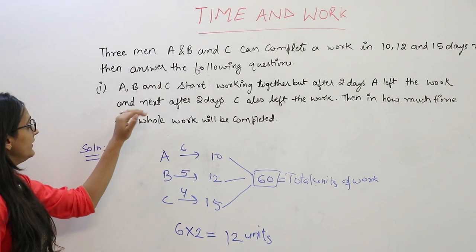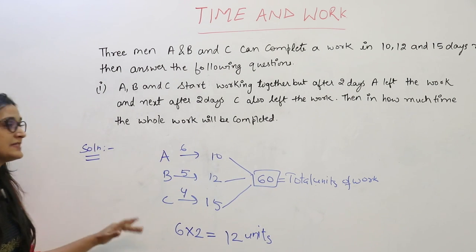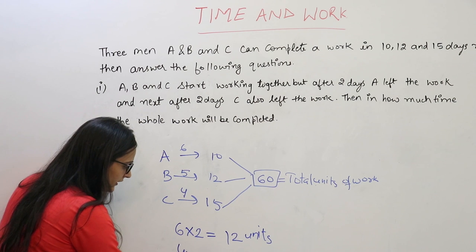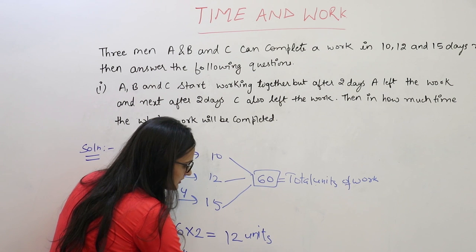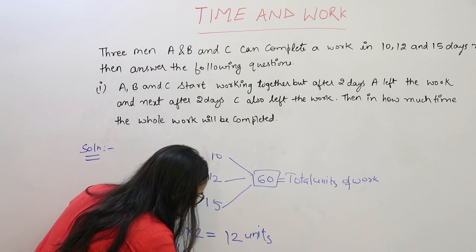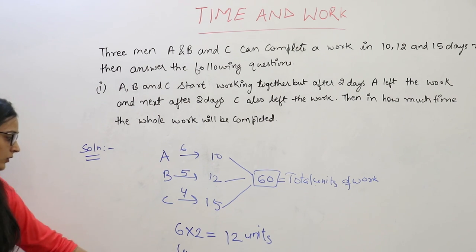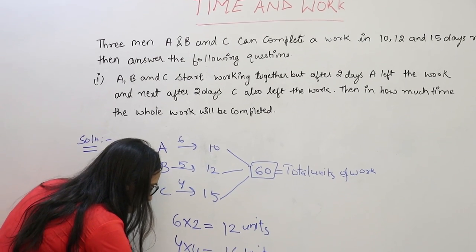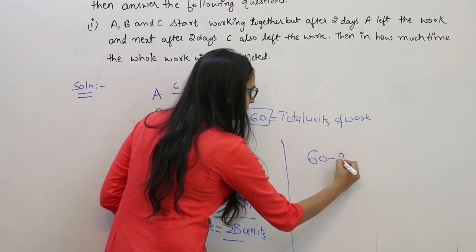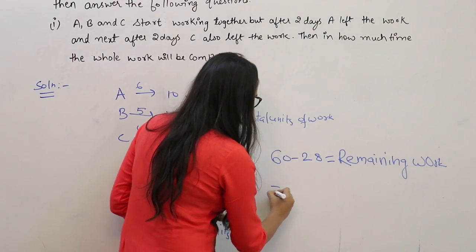The question says next after 2 days — meaning after A left, C worked for 2 more days, so C worked a total of 4 days. Now we will find the 4-day work of C. C's efficiency is 4, multiplied by 4 days. We find the work done by C in 4 days, that is 16 units. Now add this work — A did 12 units and C did 16 units — that is equal to 28 units. This work is done by A in 2 days and C in 4 days. This work done is subtracted from the total unit of work, that is 60, giving us the remaining work — that is equal to 32 units.